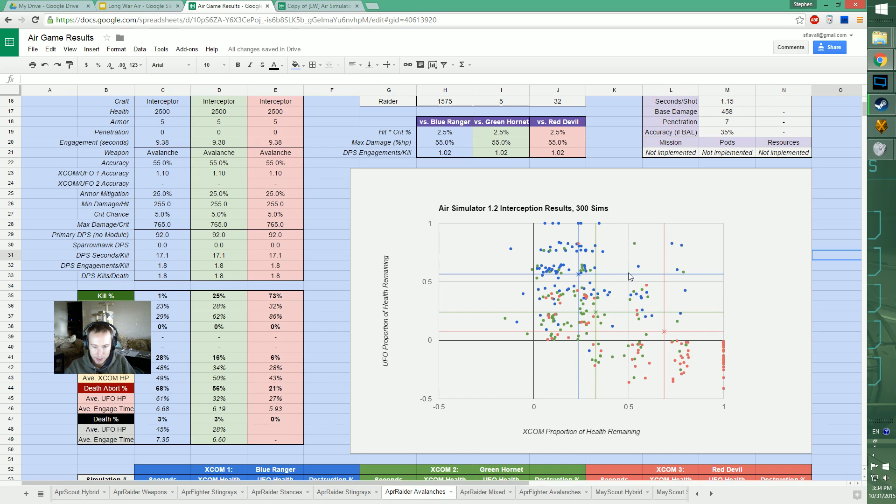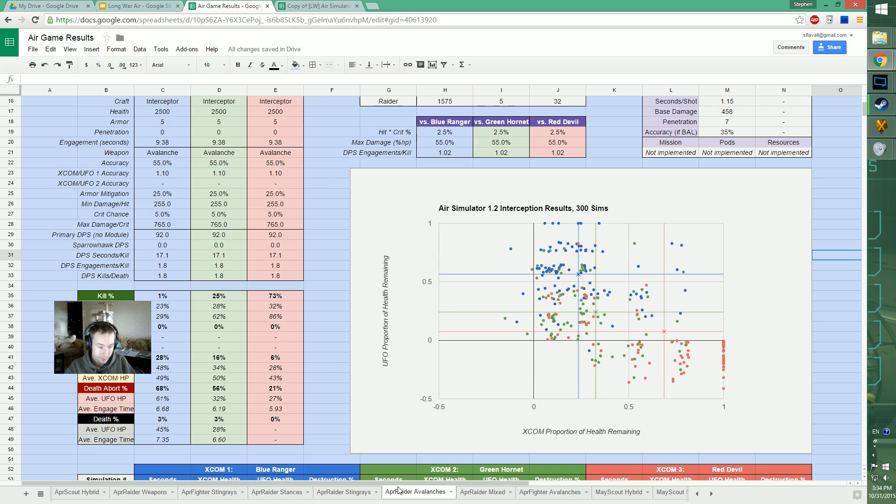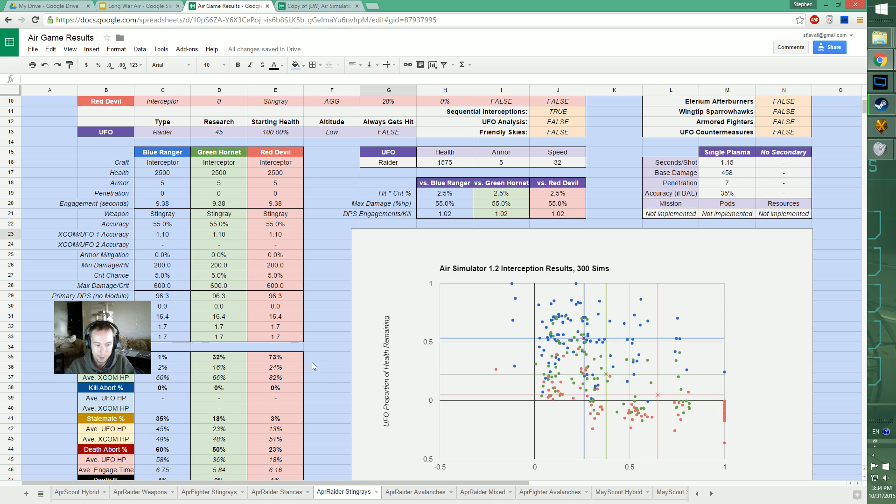32% destruction rate with Avalanches and 24% destruction with Stingrays. Overall I'd recommend if you're going to send with only one interceptor type, send with Stingrays. You're going to destroy it less which generates more crash missions, and you're more reliably going to bring it down with a fourth or fifth interceptor.